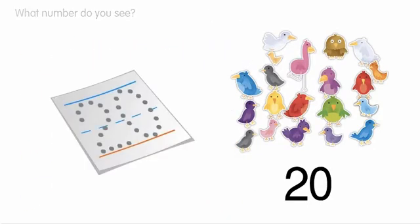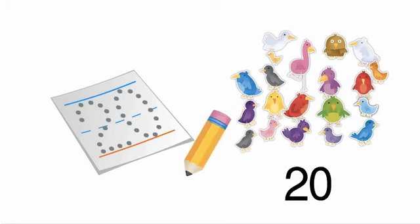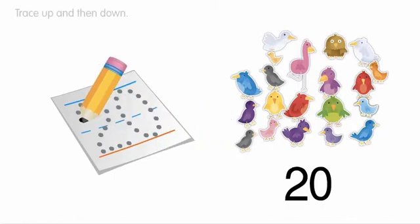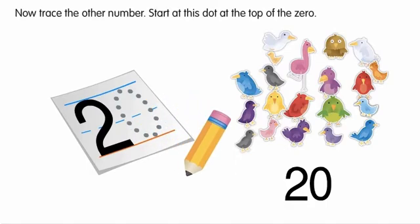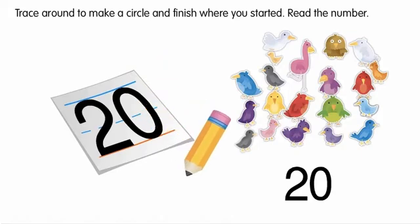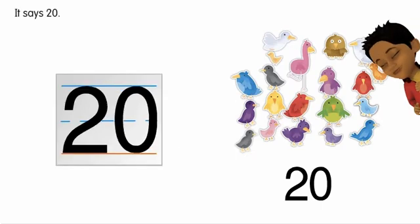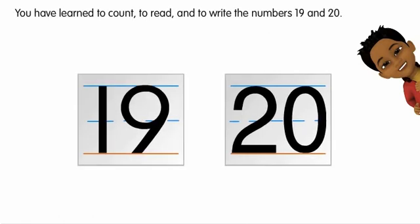What number do you see? It is the number 20. Why is this number shown? 20 is how many birds there are. Where do you start to trace? Start at this dot at the top. Trace up and then down. Trace across. Now trace the other number. Start at this dot at the top of the zero. Trace around to make a circle and finish where you started. Read the number. It says 20. You have learned to count, to read, and to write the numbers 19 and 20.